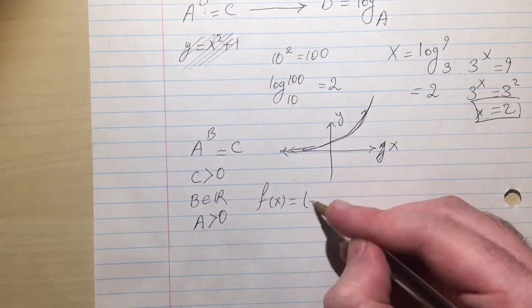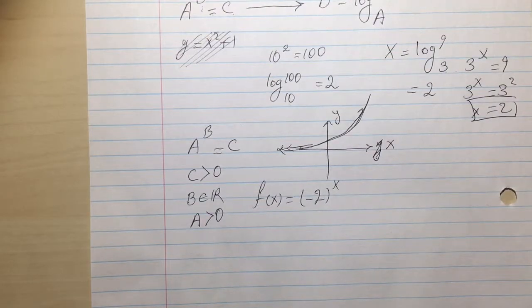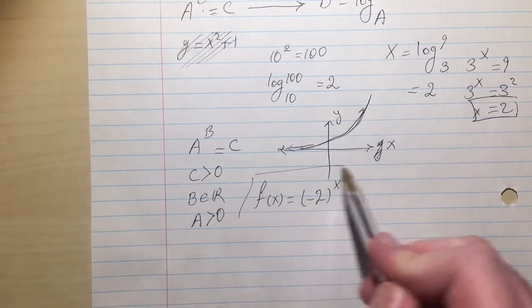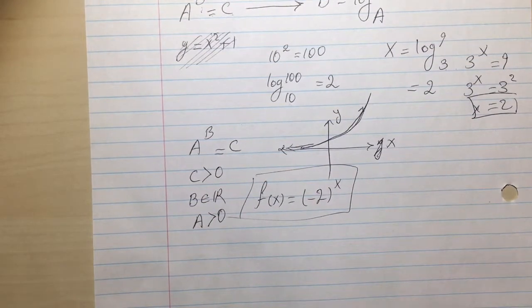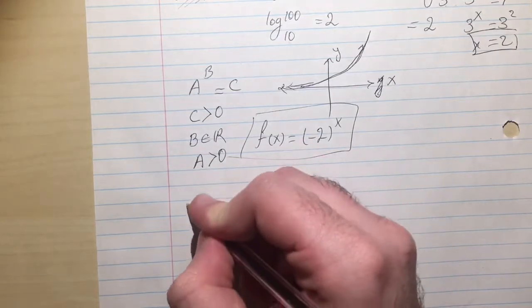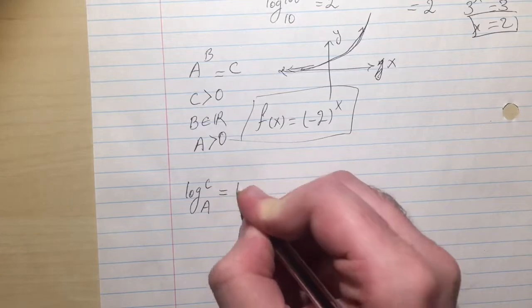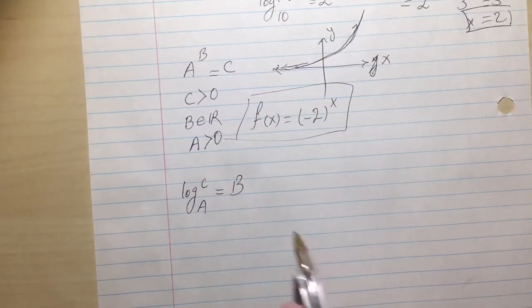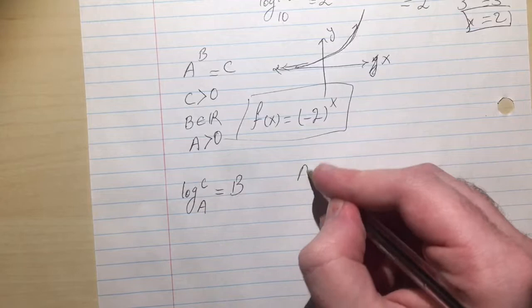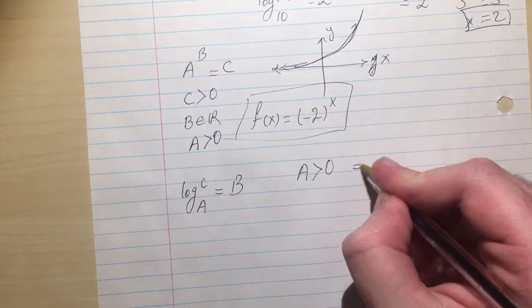And in result you cannot write anything in terms of logarithm with this function. So in log we apply the same restrictions plus one special restriction. We say log C base A is equal to B. Here A is always greater than 0 and is not 1, C is always greater than 0.